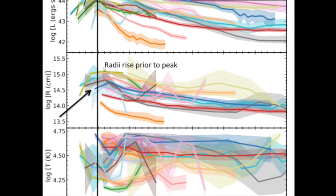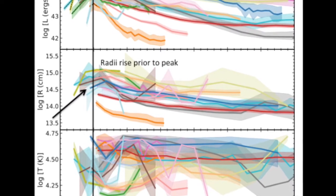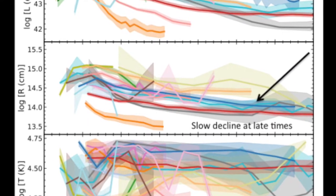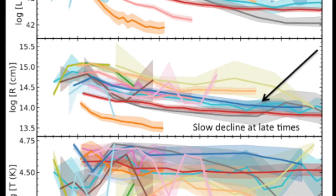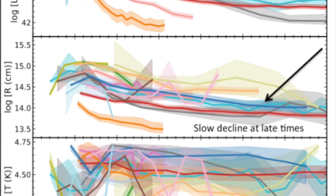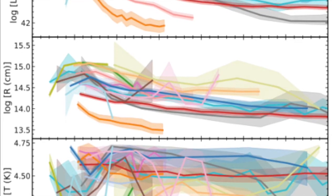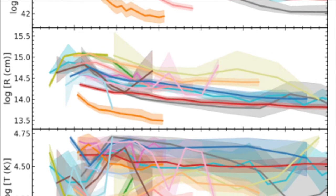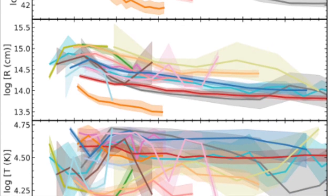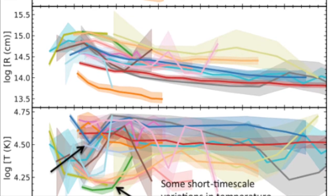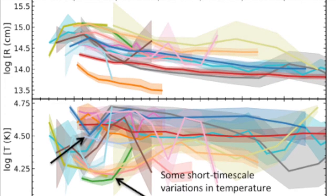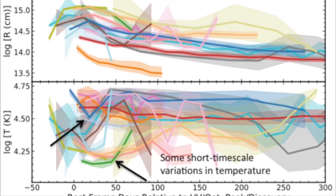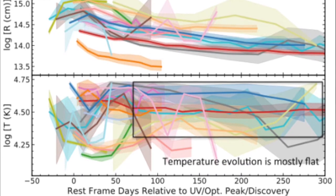We find that the black body radii generally rise prior to peak, shown here in the black line, and for objects with late-time Swift data, the black body radii slowly decline. Shifting our focus to effective black body temperatures, we find that some objects exhibit short timescale variation in temperature between roughly peak and 50 days after peak. Generally, though, the temperature evolution is flat, particularly at late times.